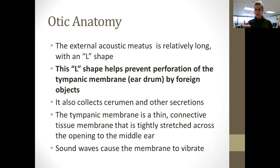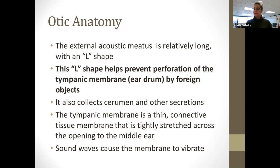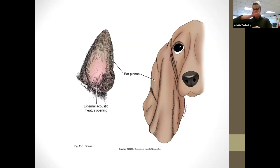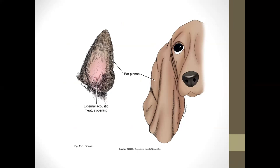For humans, they tell you never to stick a Q-tip in your ear because you'll hit your eardrum. It's a little harder to hit a dog or cat's eardrum because their ear canal is shaped like an L. This question usually shows up on your AVA — the shape of the ear canal — so make sure you remember it's shaped as an L. The L-shape actually helps prevent perforation of the eardrum by foreign things coming in. It also collects cerumen and other secretions within that L.